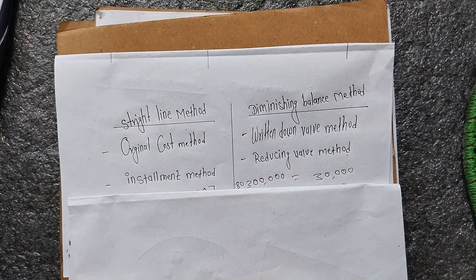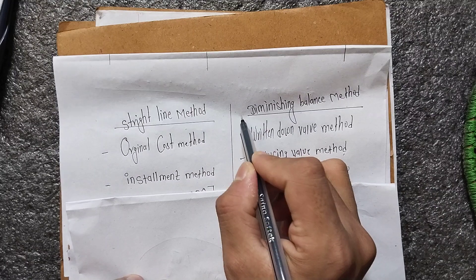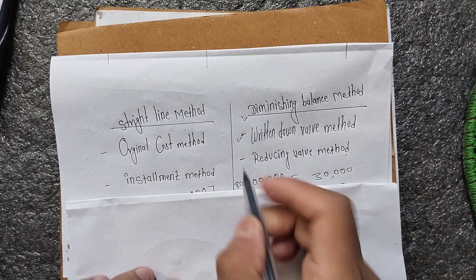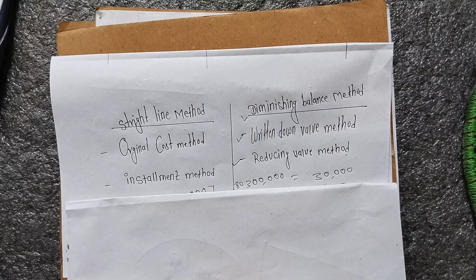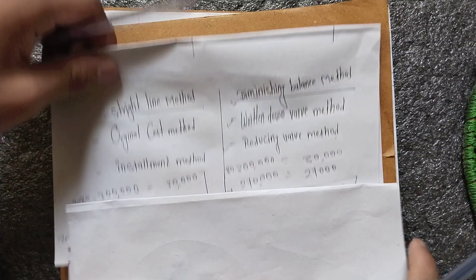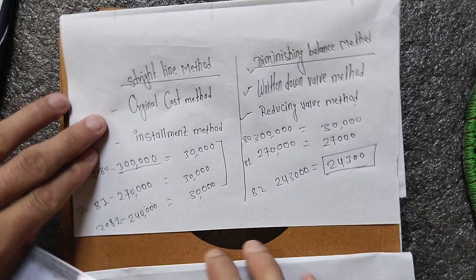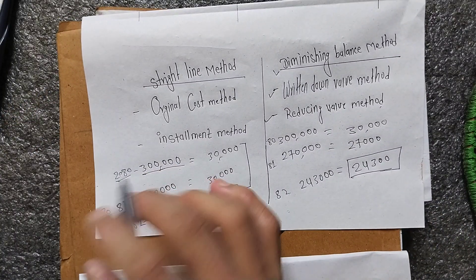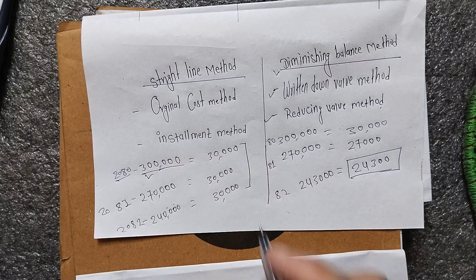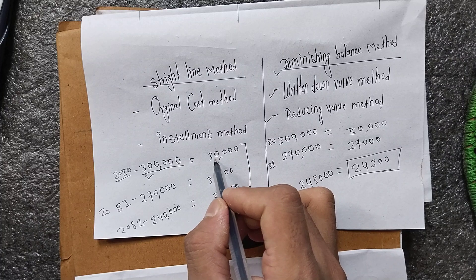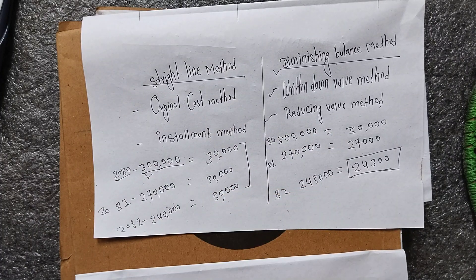We are going to look at the straight-line method and the reducing balance method. There are differences between the two. For example, we did 1,20,000. The cost of machinery was 3,00,000, and we had a 10% cost. Now it comes down from 3,00,000 to 2,70,000, and there is a 10,000 cost applied.